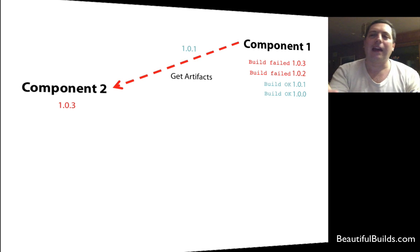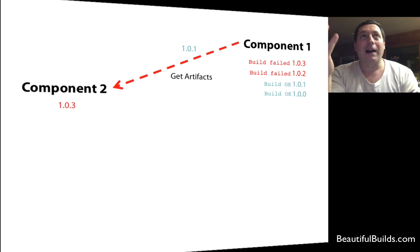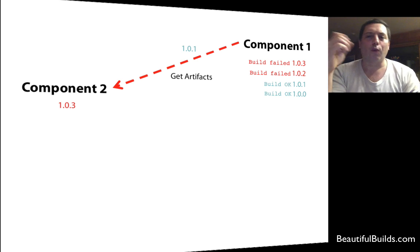Anyway, their build has not been working for the last two weeks. So their product, their component is still at version 1.0.1. So when we get the artifacts, we get an older version of component one to build with component two. Now, of course, that could create a big problem, is that we might only recognize this problem during deployment. So what we would like to do instead is to realize that there is a versioning issue or maybe to avoid a versioning issue in the first place.